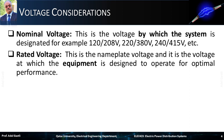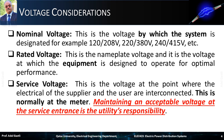The rated voltage is the nameplate voltage, and it is the voltage at which the equipment is designed to operate for optimal performance. The service voltage is the voltage at the point where the electrical systems of the supplier and the user are interconnected. This is normally at the meter, and maintaining an acceptable voltage at the service entrance is the utility's responsibility.